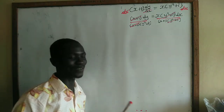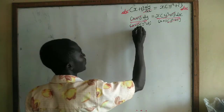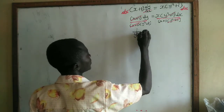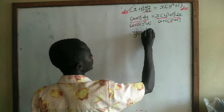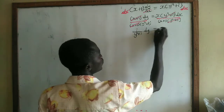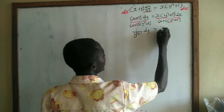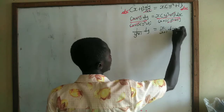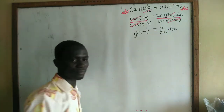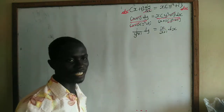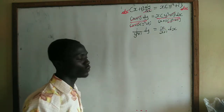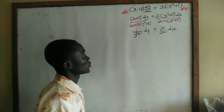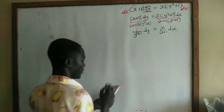That is very simple. So we are going to have: 1/(y² + 1) dy = x/(x + 1) dx. Now we can integrate both sides to find the general solution.